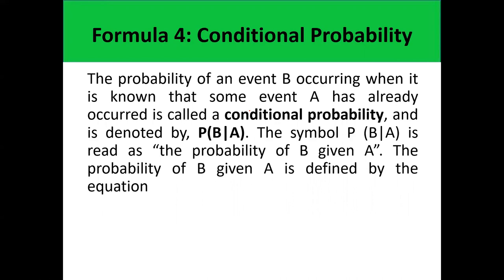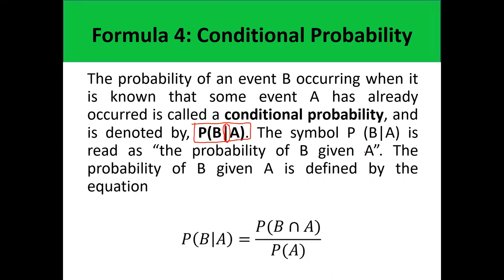Formally, the probability of an event B occurring when it is known that some event A has already occurred is called a conditional probability, denoted by P(B|A). The vertical line indicates conditional probability, and it is read as 'the probability of B given A,' or the probability that event B will happen given that event A already happened. The probability of B given A is defined as the probability of B intersection A divided by the probability of A.